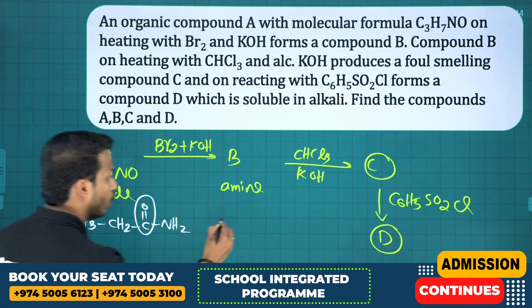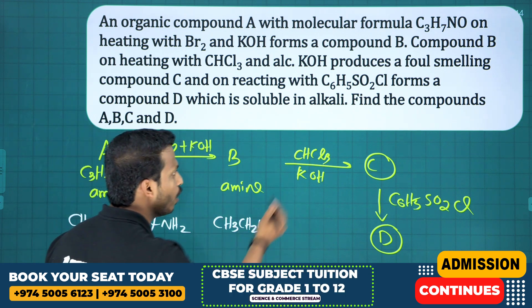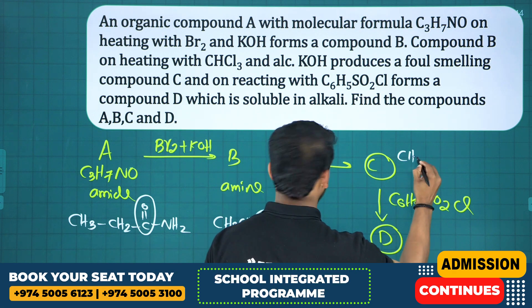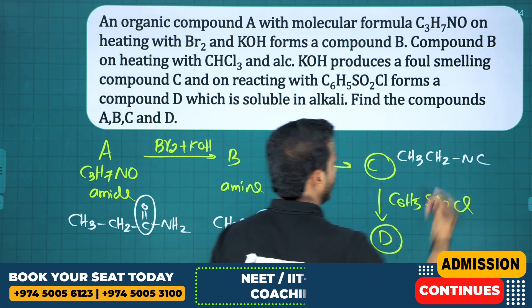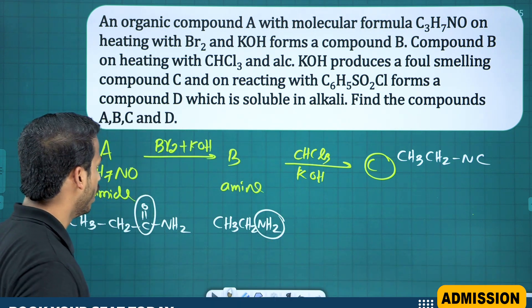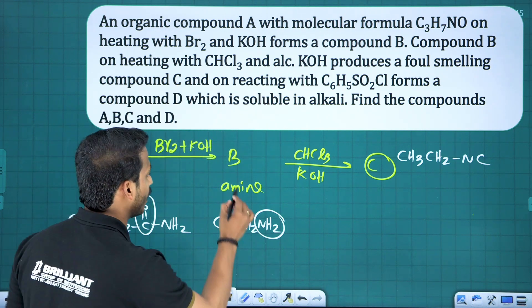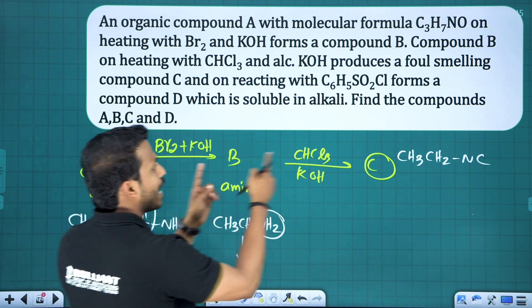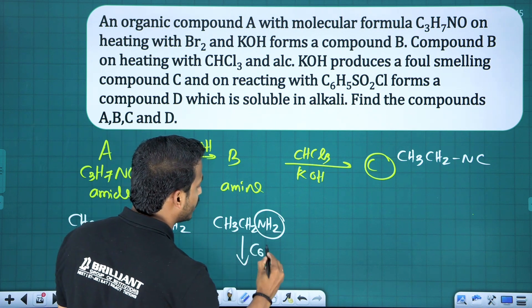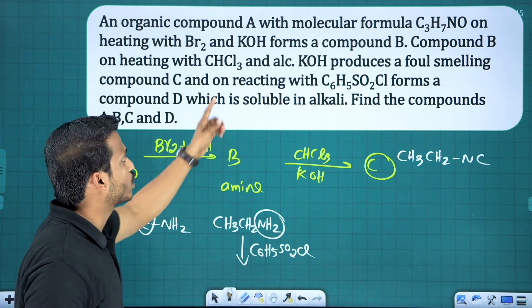Propanamide on Hofmann degradation: the CO group is removed, giving CH3CH2NH2 — ethanamine — as compound B. Ethanamine on carbylamine reaction: NH2 becomes NC, so compound C is CH3CH2NC (ethyl isocyanide). On reaction with benzene sulfonyl chloride (C6H5SO2Cl, Hinsberg reagent), one H and one Cl are eliminated.